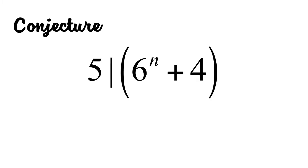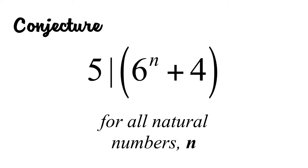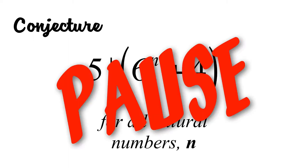Our conjecture is that five divides the sum of six raised to the n and four. And we claim that this is true for all natural numbers.